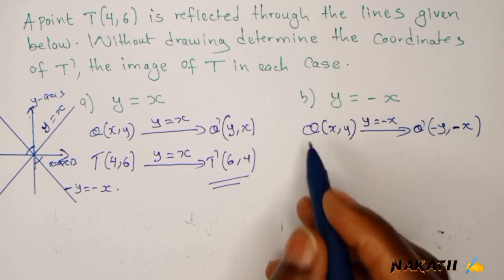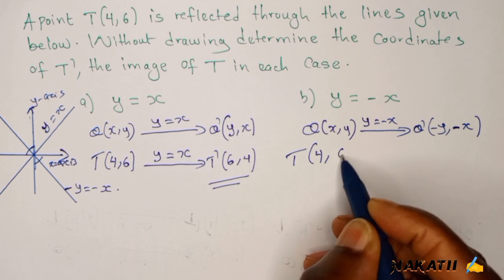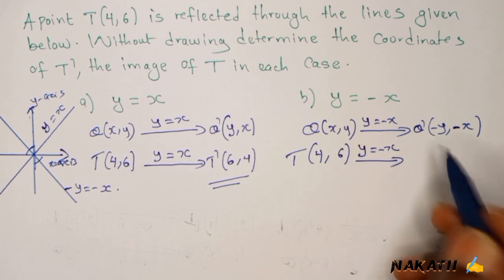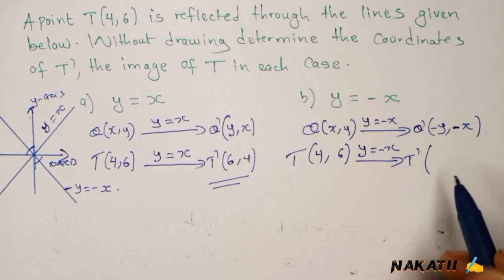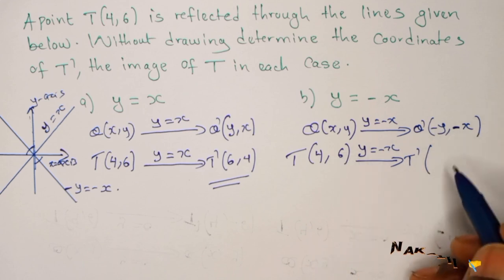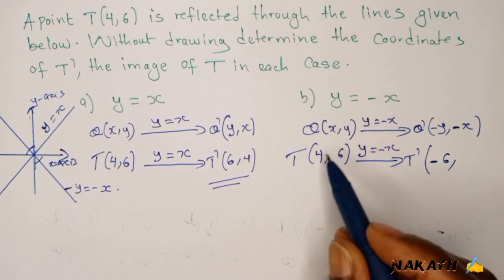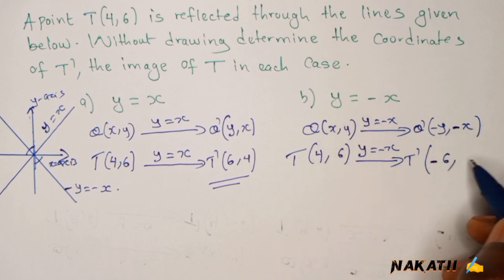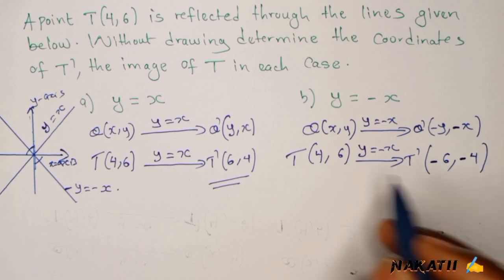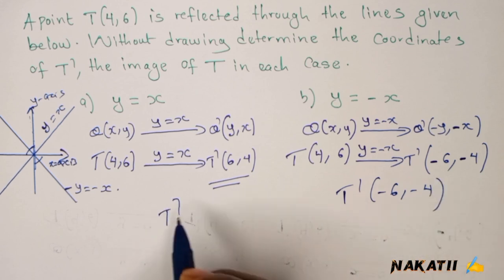In our case here, if we have T which is (4,6), if I'll get T', I interchange the value of y here which is 6, so it comes first, so you interchange with the sign so this will be negative 6, and you bring x, the value of x. It is positive now, it will be negative 4. So therefore our T' will be (-6,-4) here, and our T' here will be (6,4).